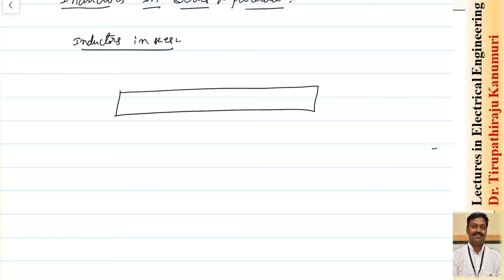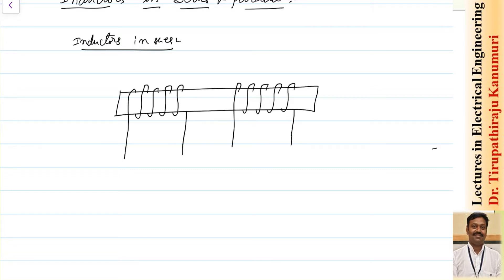Let's take two coils: the first coil is wound one way and the second coil is wound another way. Whenever coils are wound, we represent them with dot notation. The dot indicates: if current is entering the dot of one coil and also entering the dot of the second coil, or if current is leaving both dots, the mutual inductance between them will be positive. If current enters the dot of one coil and leaves the dot of the other, the fluxes are in opposite directions and the mutual inductance will be negative.